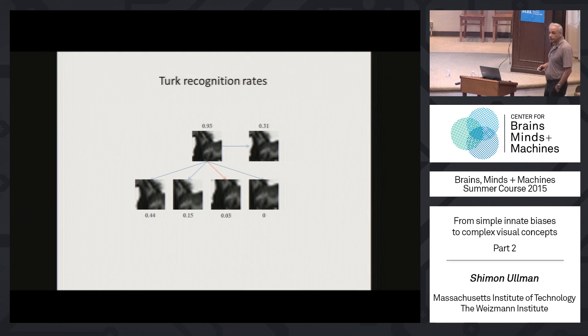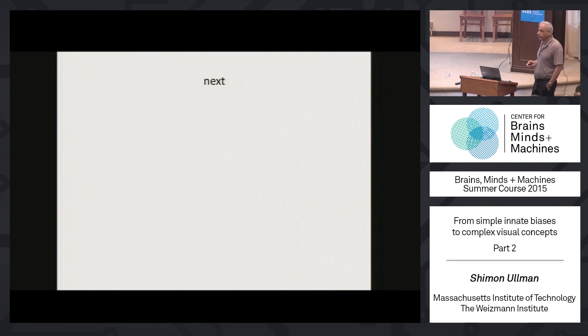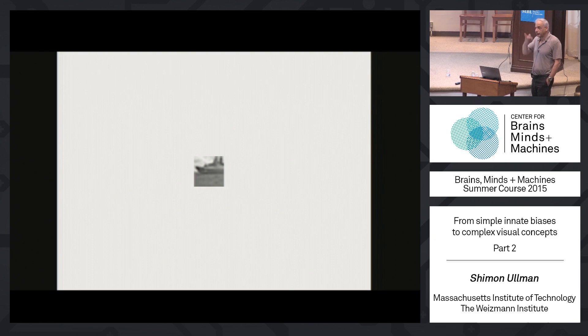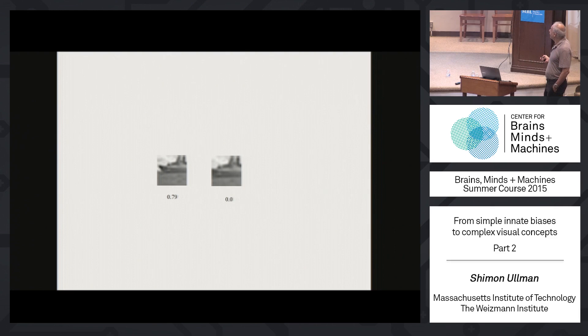Let's try one more for fun. Nobody recognized it initially — it was a boat. So 80% on this one, 0% on the sub-image. You can see that what's really missing is the tip here. Clearly this tip — a particular sharp corner — makes an enormous difference, and it goes from 80% to 0%.